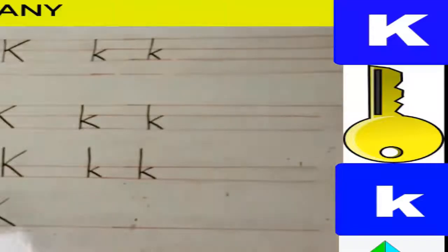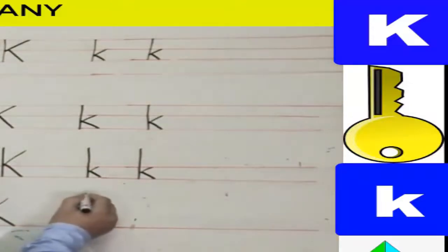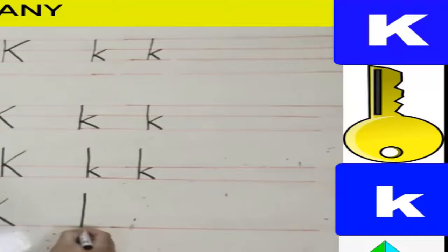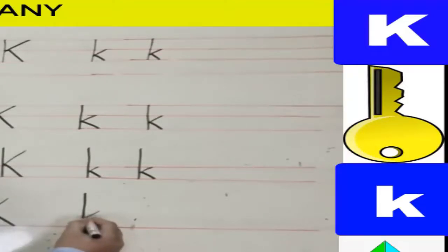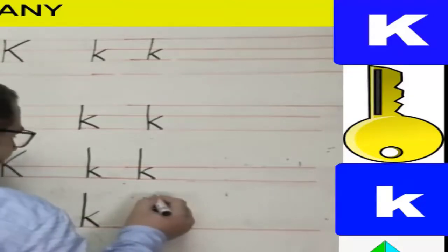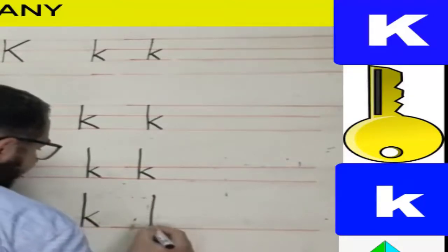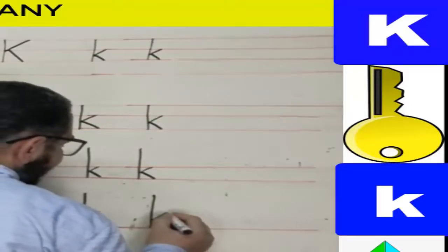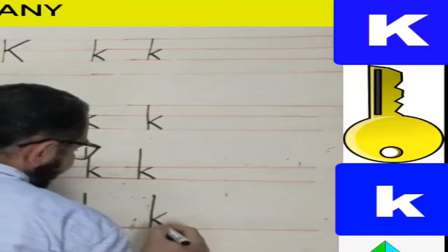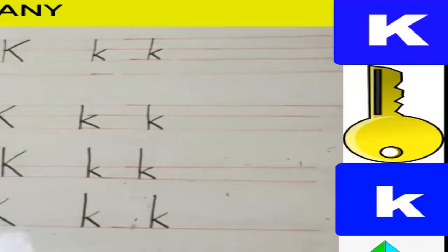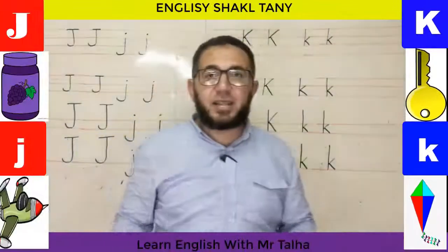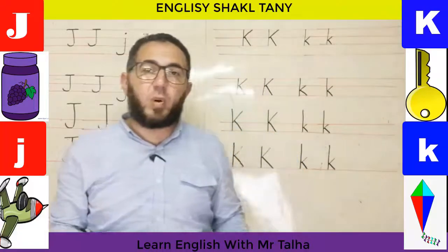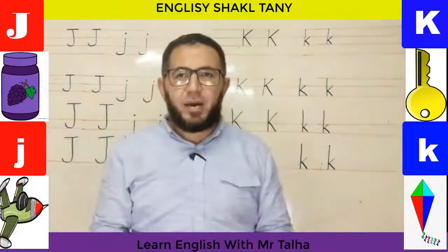When writing lowercase k on one line, the small k sits on the line. I start at the top, go down to the line, then make a small diagonal line up and another small diagonal line to the bottom. Again: start at the top, go down to the line, then a small diagonal up and another diagonal down. That's how we write K capital and K small on the lines.